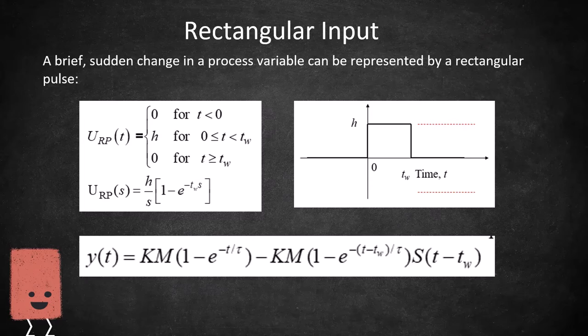but it comes back down to zero at a specific time, which we will be calling tw. We will put this into a function of time, Laplace transform it, and then plug it into our overall model.